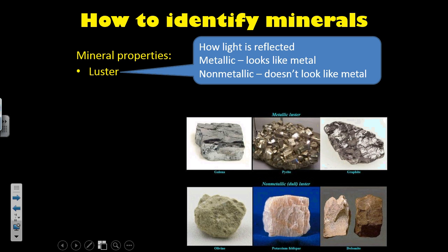The first is mineral luster. Essentially, this is how light is reflected by the mineral. There are two types of mineral luster. There is metallic mineral luster, shown in these three examples here at the top. These are essentially ones that look like metal — they're silver, they're gold, they're bronze — and you can't see through them. Those are important characteristics of metallic minerals.